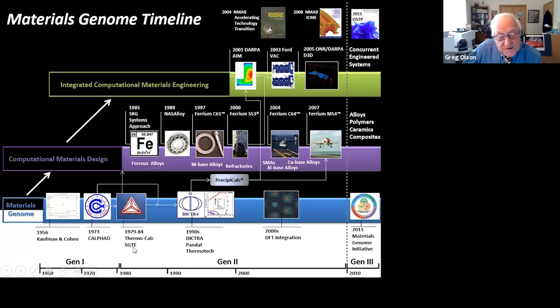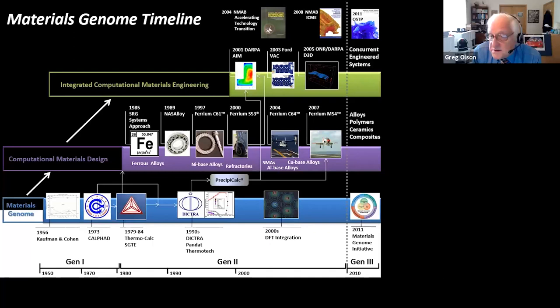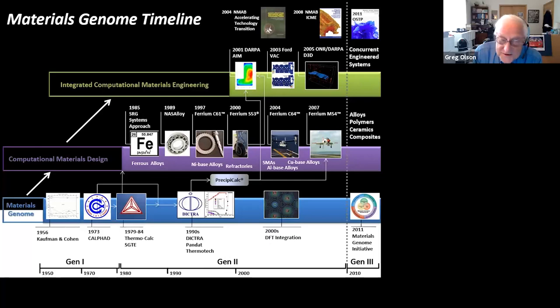The arrival of the ThermoCalc system as a commercial code, with a supporting database structure set by the European SGTE consortium, established standardization and really inspired our founding in 1985 of our SRG design consortium at MIT. The idea was to create a general methodology of computational materials design enabled by these underlying CALPHAD databases, using high-performance steels as the first example — we had studied steels the longest, had the deepest predictive science foundation, and had the highest quality thermodynamic data available. Throughout the 1990s we did demo projects applying the same methodology to other alloy systems, polymers, ceramics, and some composites to show its generality.